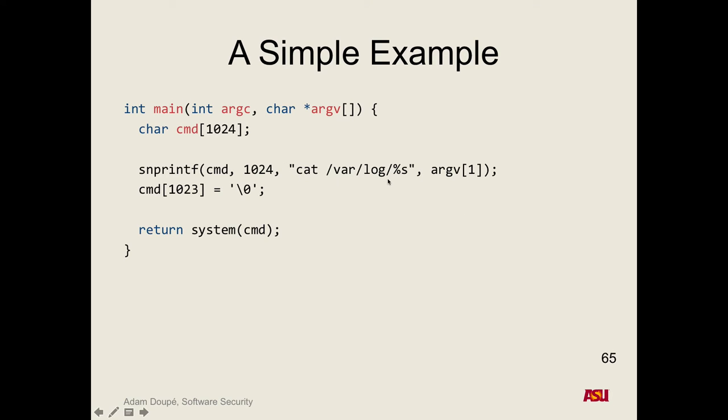Here we're building up the cat /var/log command. This is a setUID binary. What is it vulnerable to? A dot-dot attack — we can cat out any file. We can read any file from here. And specifically we can use a semicolon to execute any other commands we want.